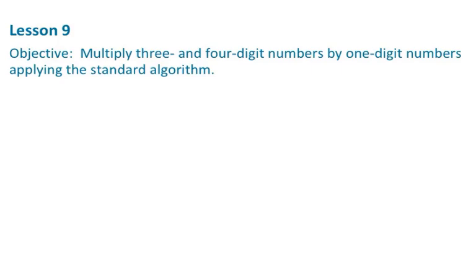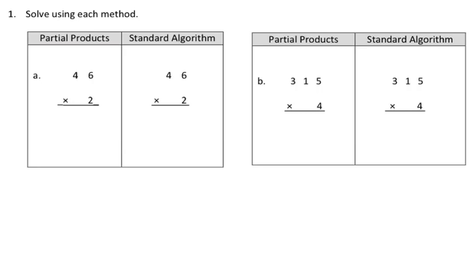This is grade 4, module 3, lesson 9, and the objective in this lesson is to multiply 3 and 4 digit numbers by 1 digit numbers, applying the standard algorithm. We're going to be looking at question number 1, and it says solve using each method. So we're going to do a partial product and the standard algorithm.